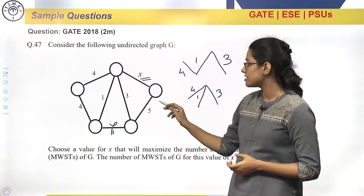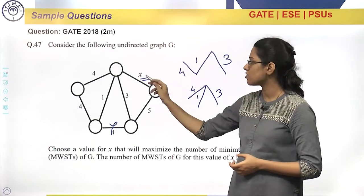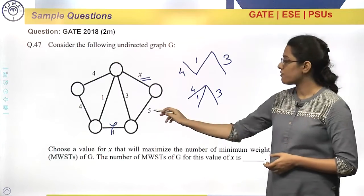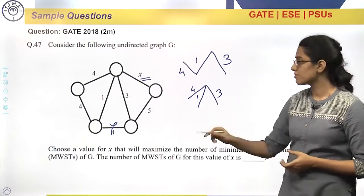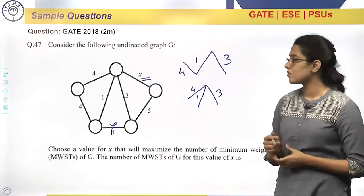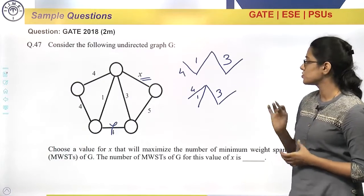Now, to connect this node, either I can consider this edge or this edge. If 5 is the lightest weight, it will get considered always. So we will form just 2 structures.